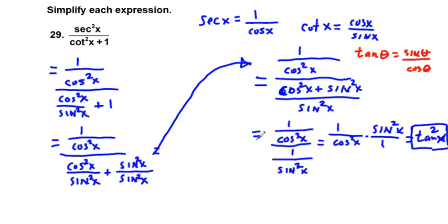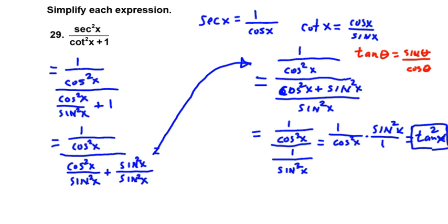Good luck on the even-numbered problems as a demonstration of learning. These are not the easiest things in the world to do, but try to work through them by changing things in terms of sine and cosine, eventually simplifying and getting common denominators. Things usually cancel out pretty well. If they don't, you're probably down a dead end and need to try something else. Good luck to you, and thanks for viewing.